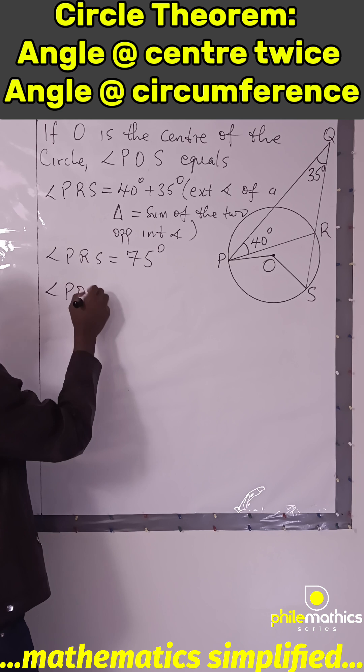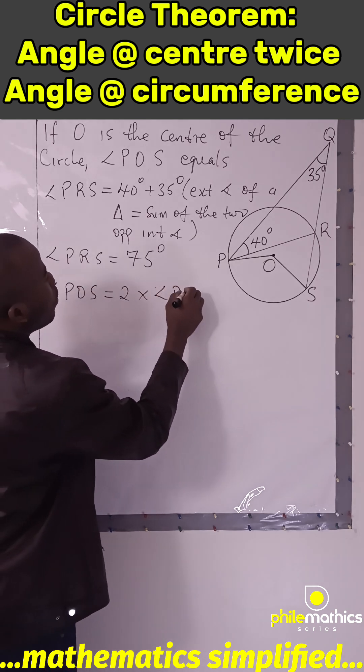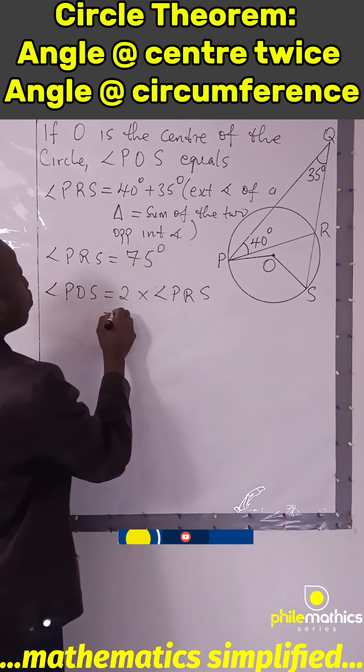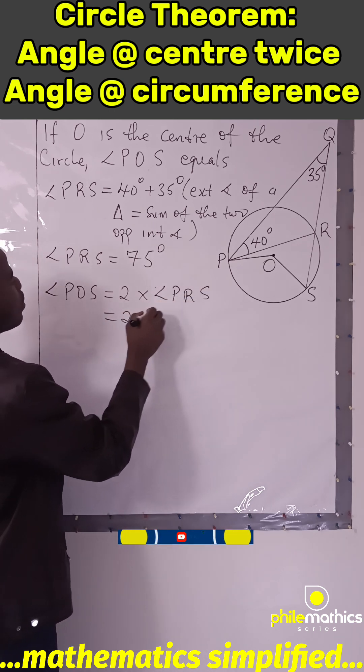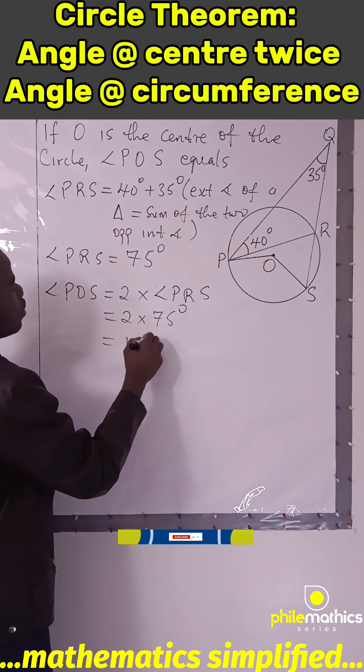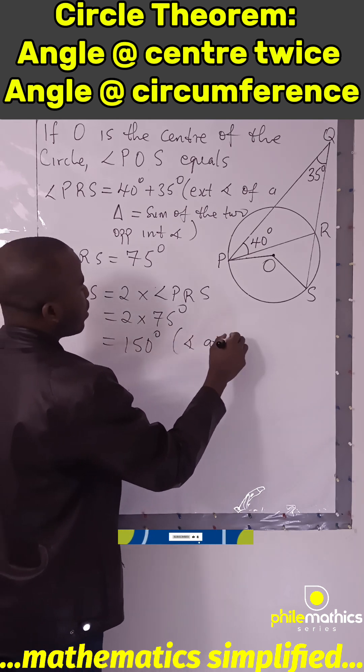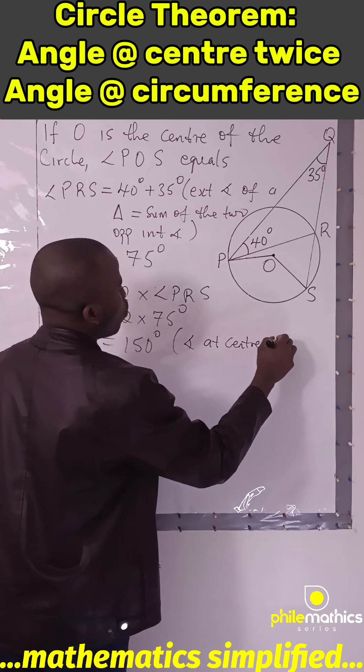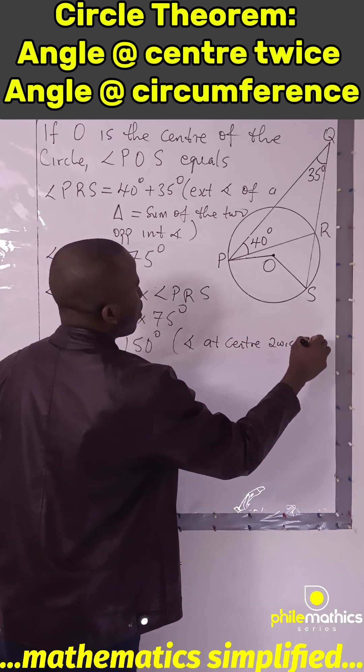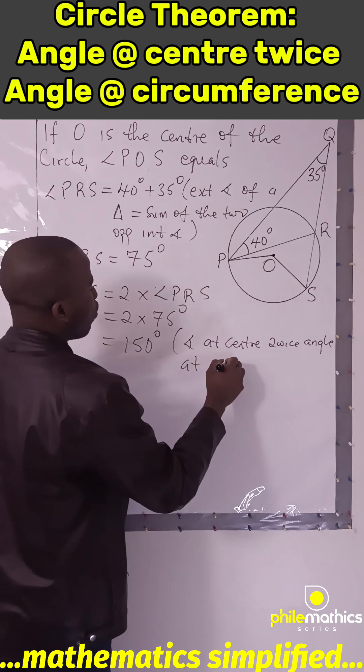angle POS is 2 times angle PRX. Therefore, angle POS is 2 times 75 degrees, which is 150 degrees. We call it angle at center twice angle at circumference.